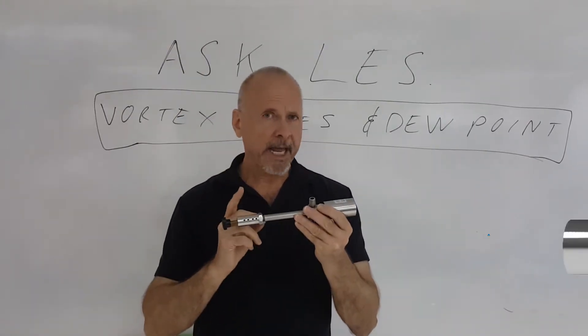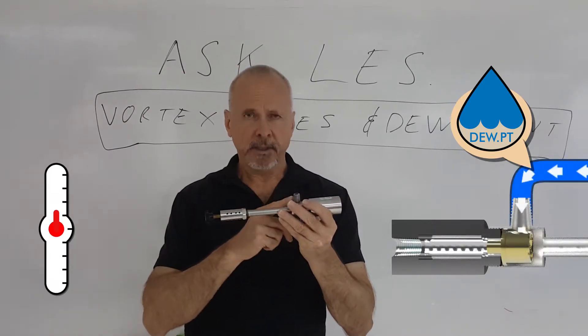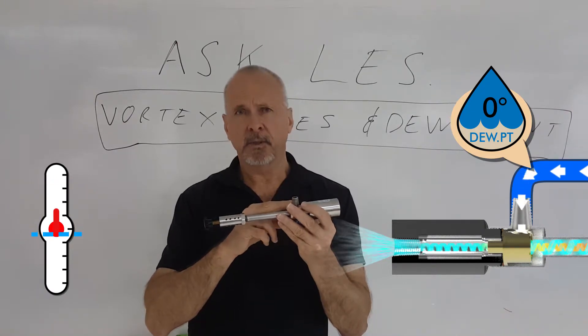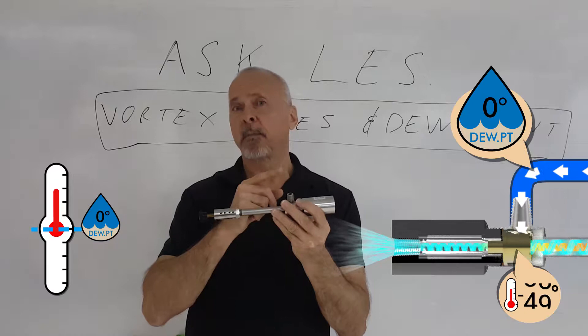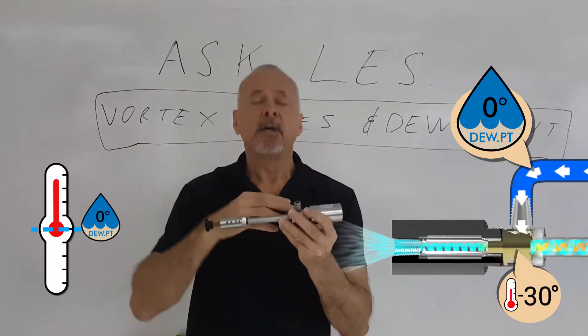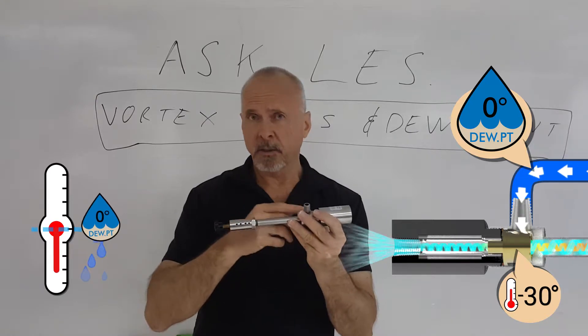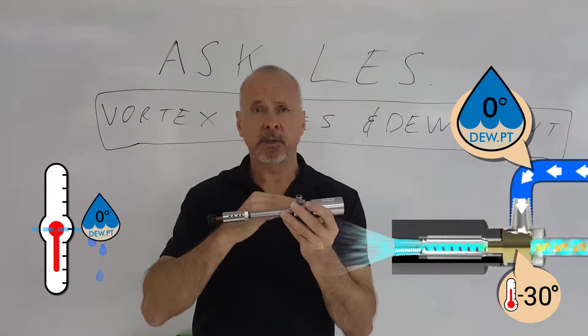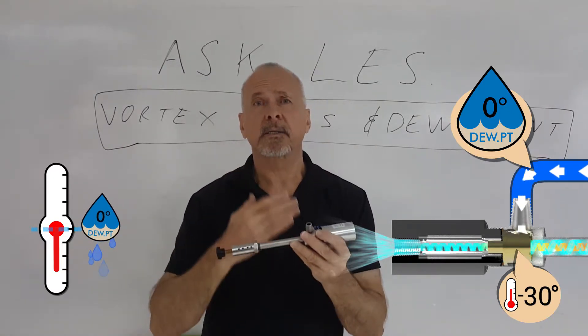So what was happening is that the dew point being supplied to the vortex tube was about zero, a little bit above zero degrees Celsius. When the temperature inside the vortex tube dropped to minus three degrees Celsius, you started getting below the dew point, even though the pressure was a little bit lower as well inside.